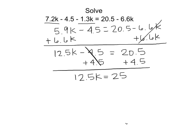Now I only have the k term on the left-hand side, but the k is multiplied by 12.5. So I want to undo that multiplication by 12.5 by dividing both sides by 12.5. And 12.5 over 12.5, that reduces to 1. So I'm left with k on the left equals 2 on the right. So that is the solution to my equation, k equals 2.